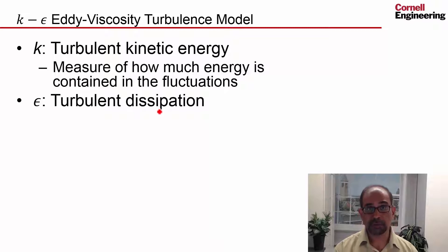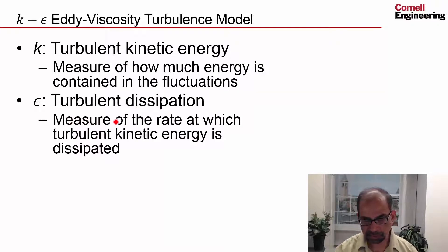Epsilon is the turbulent dissipation. It is a measure of the rate at which turbulent kinetic energy is dissipated. So the dissipation is killing the turbulent kinetic energy.